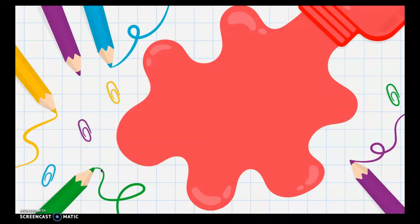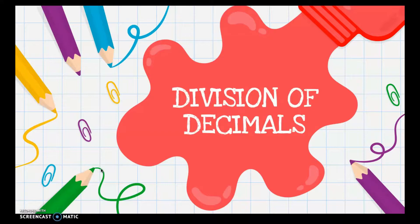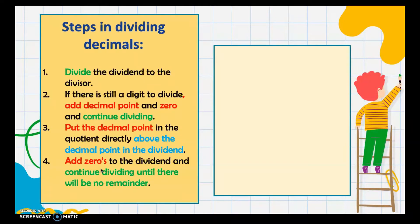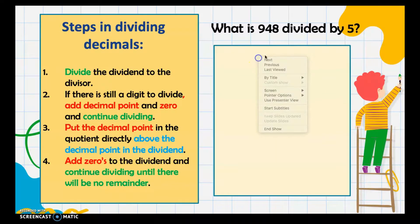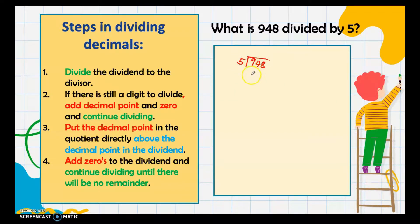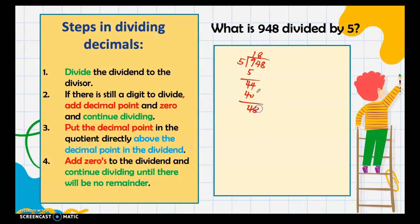Good day everyone. Our discussion is division of decimals. We have learned steps in dividing decimals. The first step is to divide the dividend by the divisor. For example, what is 948 divided by 5? We divide 9 by 5: that gives 1, then 1 times 5 is 5. Bring down 4, giving 44. 44 divided by 5 is 8, and 8 times 5 is 40. Bring down 8, giving 48. 48 divided by 5 is 9, and 9 times 5 is 45.